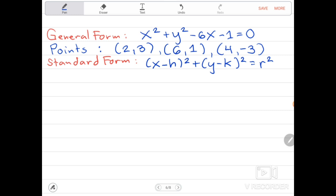Coming from general form, we need to have the standard form which is quantity x minus h squared plus quantity y minus k squared equals r squared. Why? Because coming from the standard form, we can get the center and radius of the circle. If we have the center and radius of the circle, we can now draw the circle.